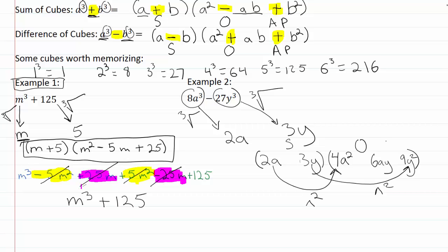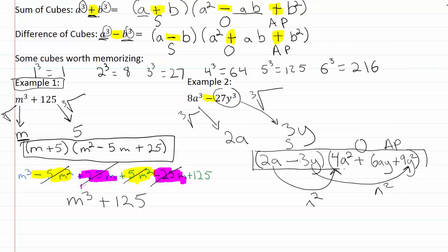Now we apply SOAP to figure out our signs: same, opposite, and always positive. Our original expression had a minus sign. So same gives us a minus sign in the first set of parentheses, the opposite of negative gives us a positive, and the last sign is always positive. That is how we use this formula to factor a difference of cubes.